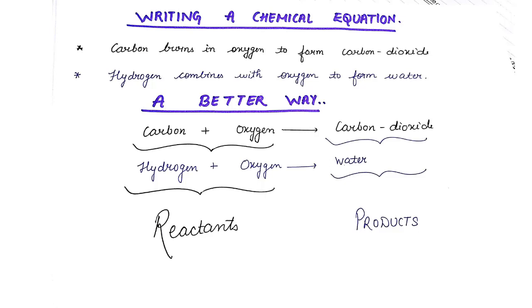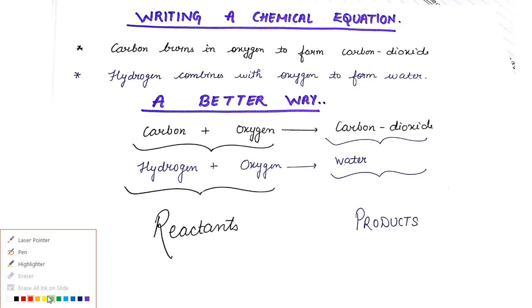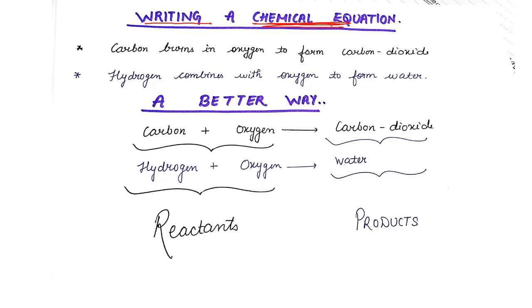Today we'll be talking about another important topic from the first chapter — chemical reactions and equations. This topic talks about how we are going to write a chemical equation and how we are going to balance it. Whenever a chemical reaction takes place, that is termed as a chemical equation. For example, carbon burns in oxygen to form carbon dioxide — this is a chemical reaction because carbon is burning with oxygen to form carbon dioxide.